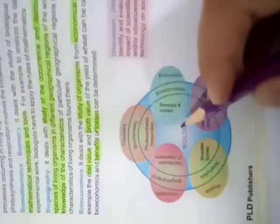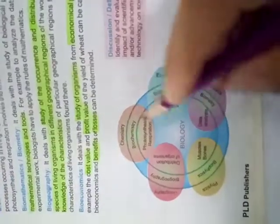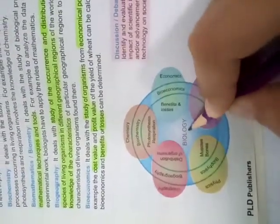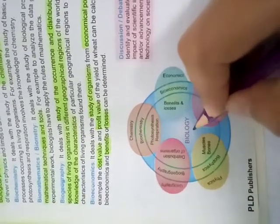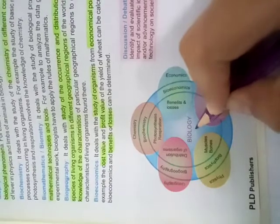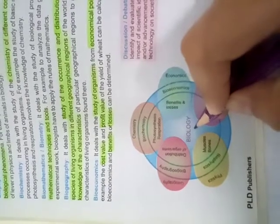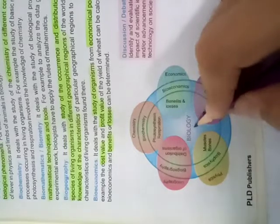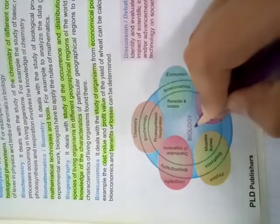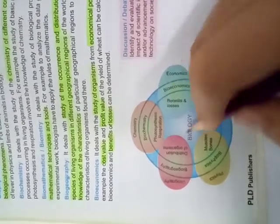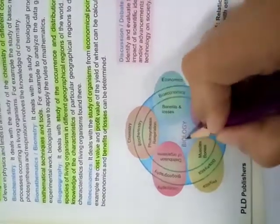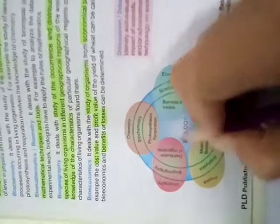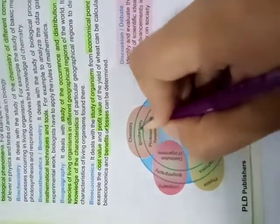Here we have a diagram of biology shown in blue. Biology has a relationship with other sciences — chemistry, math, economics, and all of them are related to bio. Basically, bio is linked to chemistry. When bio and chemistry are mixed, it is called biochemistry.